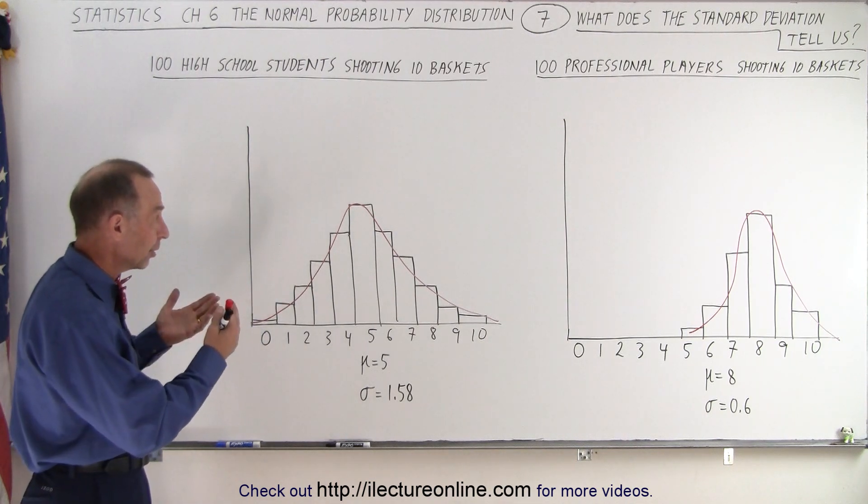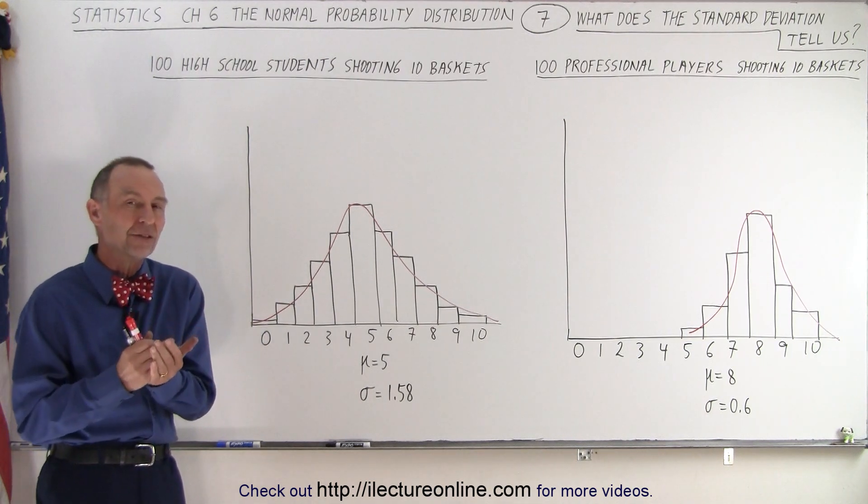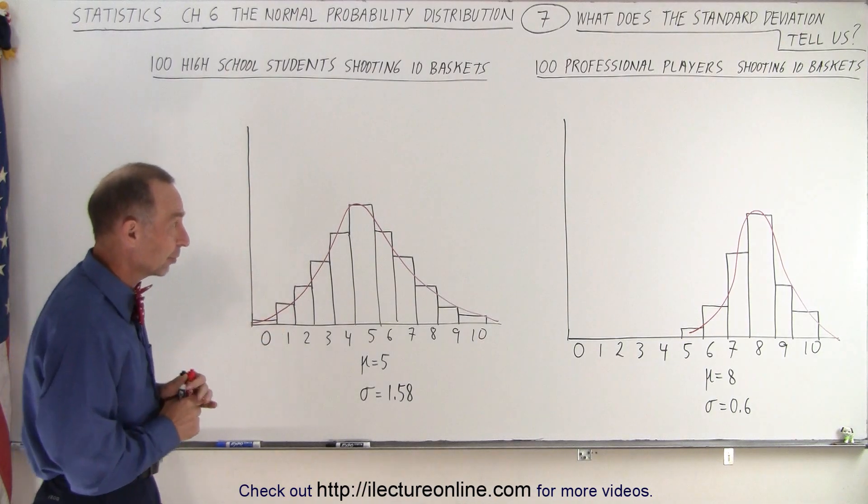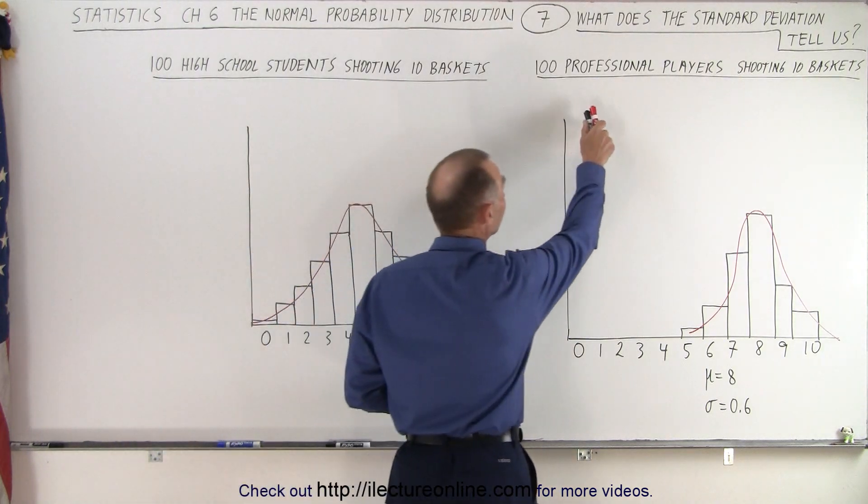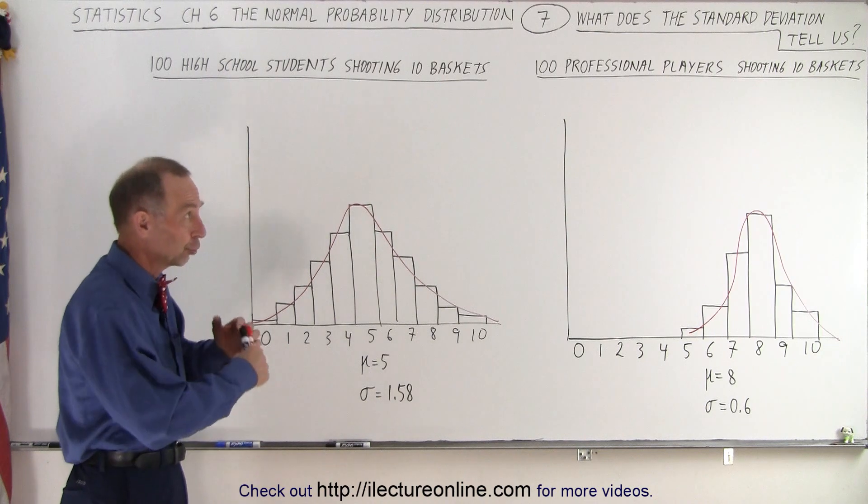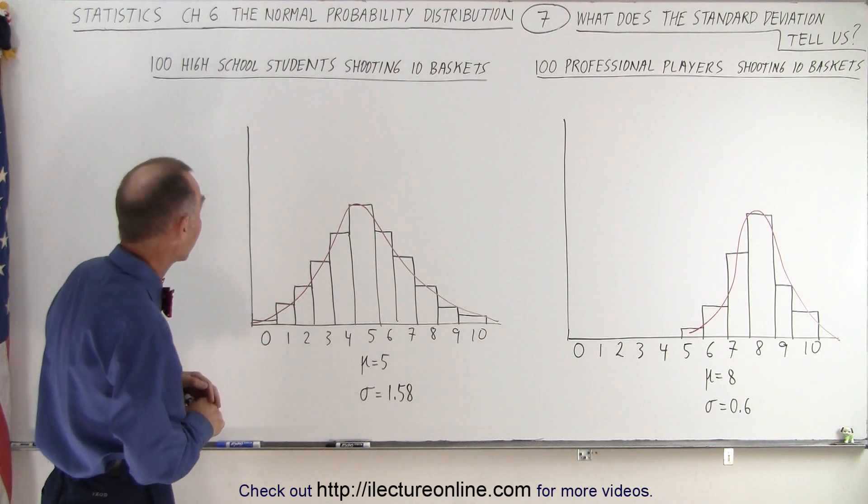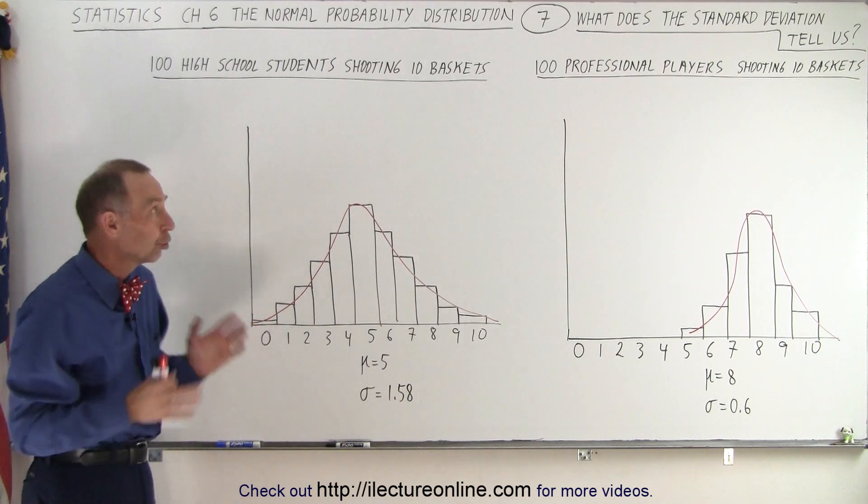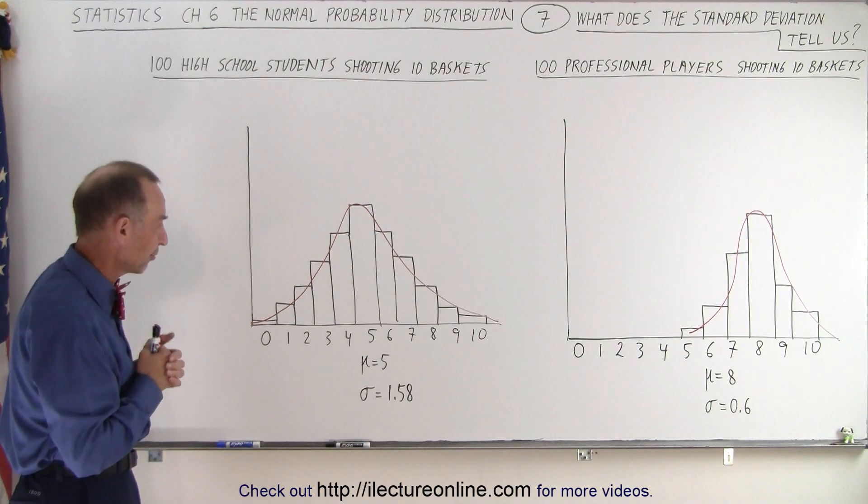We have 100 individuals shooting 10 baskets from the free throw line, but there's something different about the two groups of 100 individuals. On the right side we have 100 professional players shooting 10 baskets from the free throw line. And on the left we have 100 high school students randomly picked shooting 10 baskets from the free throw line.